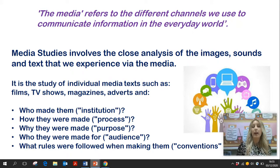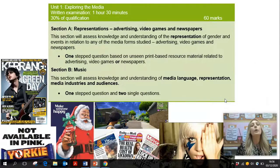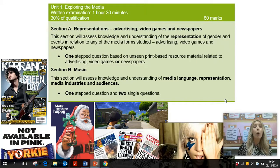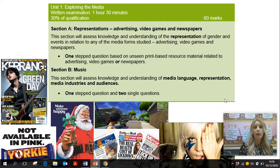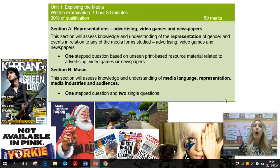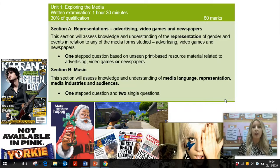Let's take you through the different units and how they are assessed. Unit one: Exploring the Media. You'll see that this is worth 30% of the qualification, and it is a one-hour 30-minute exam. In your lessons, you will learn about representations of genre and events in advertising, video games, and newspapers. You will be tested on this in an examination with a stimulus-based question, assessing what you've learned throughout your lessons based on the different media texts that you've studied.